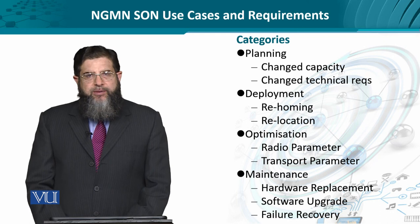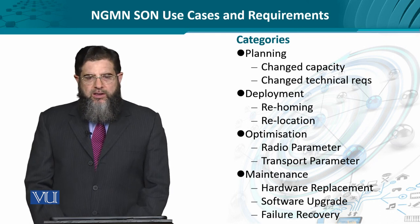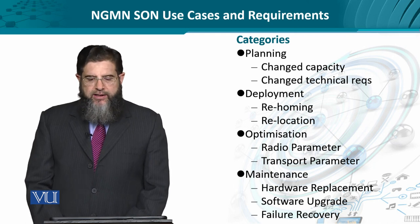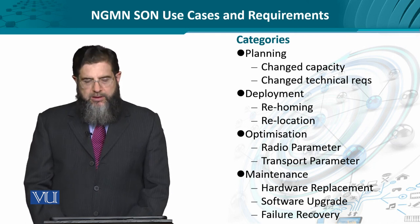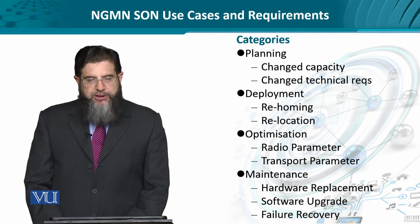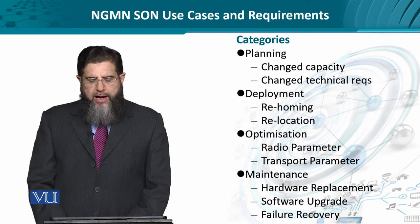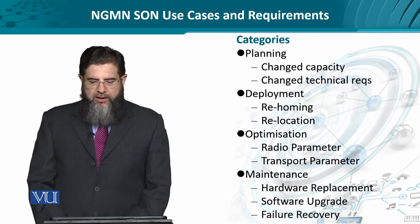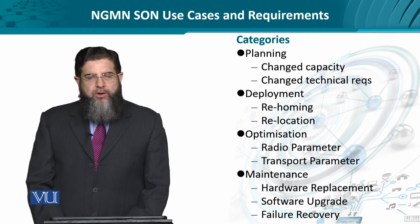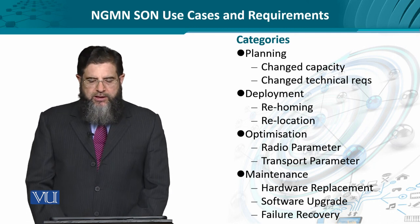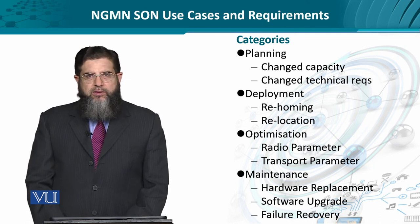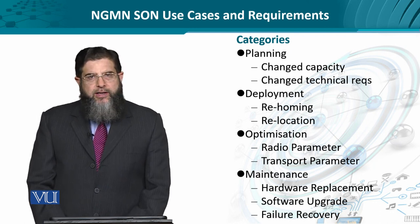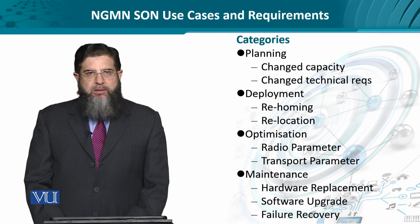Traditionally, the network design and operation can be split into four categories: planning, deployment, optimization, and maintenance. Planning, being the overarching activity, can even go through some changes while a plan has already been made, like capacity changes or technical requirements change.